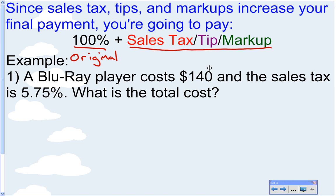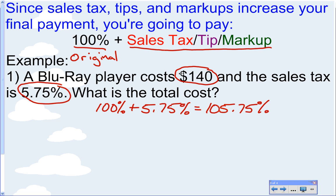So, you're going to pay 100% of the original cost. Like in this example, a Blu-ray player costs $140 originally. You're going to pay 100% of that, you're going to pay $140. Plus, you're going to pay the sales tax tip or markup. So, here's how we're going to do this. You're going to pay 100% of the original cost plus 5.75% tax. So, in essence, you're really going to pay 105.75%. Because you're paying the 100% of the original cost plus the 5.75% tax. So, we can add those two percents together and get 105.75%. And now, we're just going to use proportions like we've been doing. Like the is over of equals percent over 100.